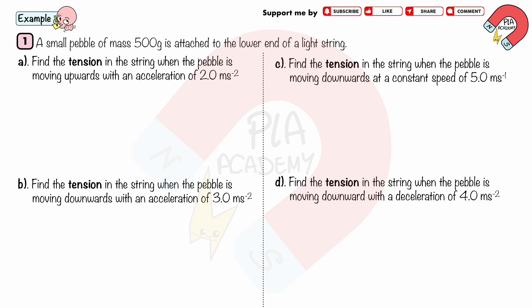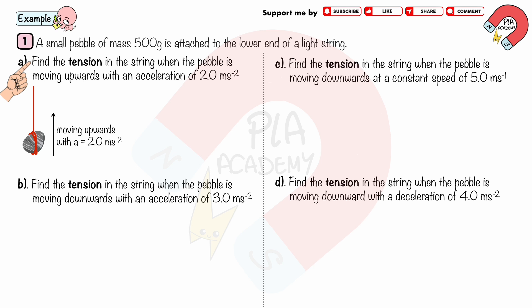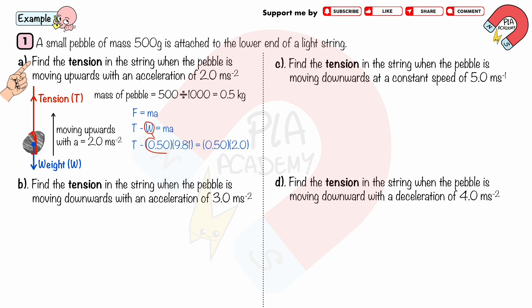Worked Example 1: A small pebble of mass 500 grams is attached to the lower end of a light string. Part a: Find the tension in the string when the pebble is moving upwards with an acceleration of 2 m/s². We convert 500 g to 0.5 kg. The free body diagram shows weight acting down and tension acting upward. Since the pebble moves upward, F = T − W = ma. Substituting W = 0.5 × 9.81, m = 0.5, and a = 2, we solve to get T = 5.9 N (2 significant figures).